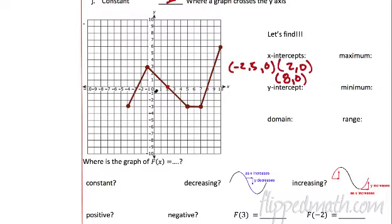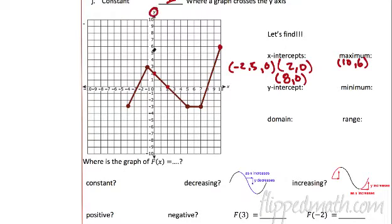The maximum value — look at the graph, where's the highest point? The highest point is right here, and that occurs at x equals ten. So I'm going to write that as a coordinate point: (10, 6). The y-intercept — where it crosses the y-axis. Here's the y-axis; it crosses right here at (0, 2). So I just need to write that as a coordinate point.